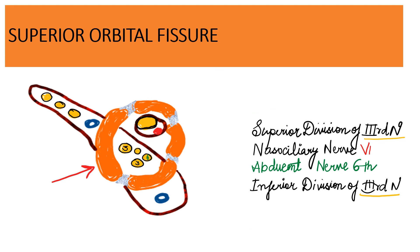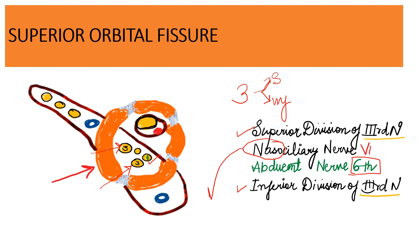The structures passing through the middle compartment of the superior orbital fissure are the third cranial nerve — both its superior and inferior divisions — along with the abducens nerve (cranial nerve 6), which passes between the superior and inferior divisions of the third nerve. The nasociliary nerve, a branch of the ophthalmic division of the trigeminal nerve, also passes through the middle compartment. A mnemonic: the nasociliary nerve, like the nose, passes through the center.